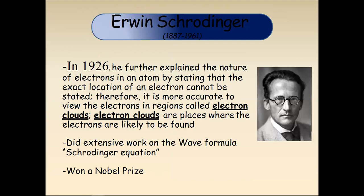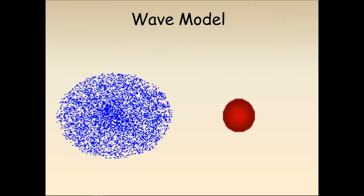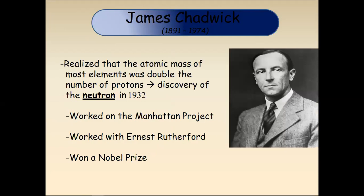Another model was introduced by Erwin Schrödinger. In 1926, he further explained the nature of electrons in an atom by stating that the exact location of an electron cannot be determined. Therefore, it is most accurate to view electrons in a region called an electron cloud — where electrons are likely to be found. He introduced the Schrödinger equation and also won the Nobel Prize.